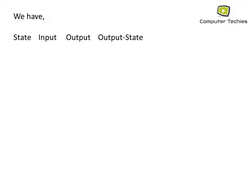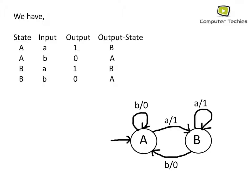We have state, input, output, and output state. If we are on state A and input a is applied, we get output 1 and move to state B. If we are on state B and input b is applied, the output is 0 and the output state is A. Using this, we can draw the Mealy machine. This is the required Mealy machine equivalent to the previous Moore machine.